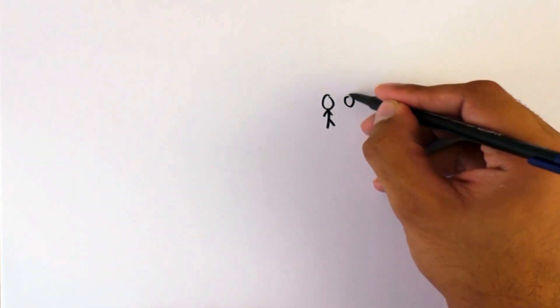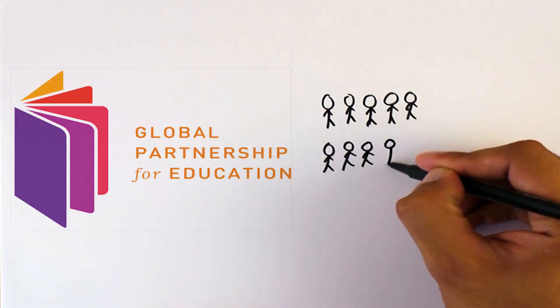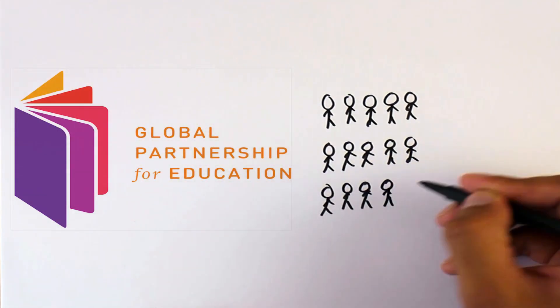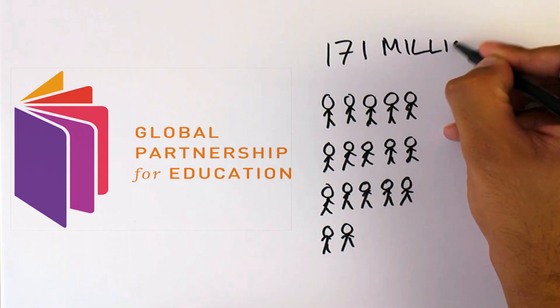For example, according to the Global Partnership for Education, if all students in low-income countries left school with basic reading skills, it could lead to an estimated 171 million people being lifted out of poverty.